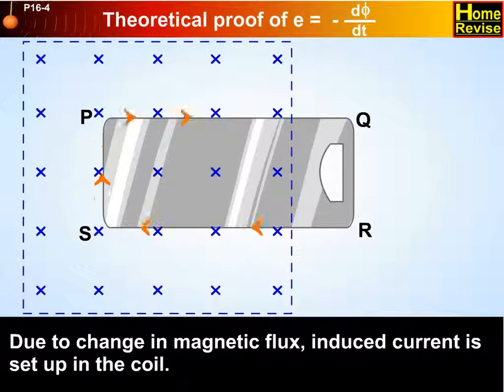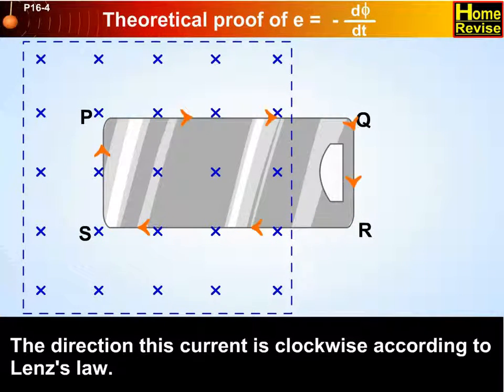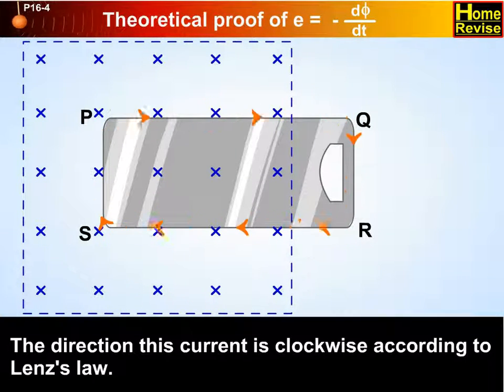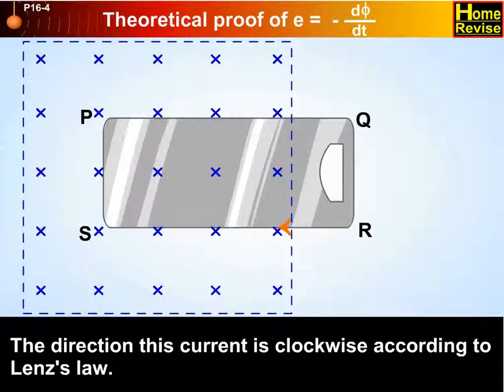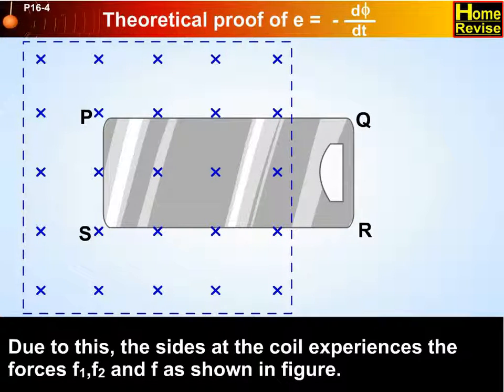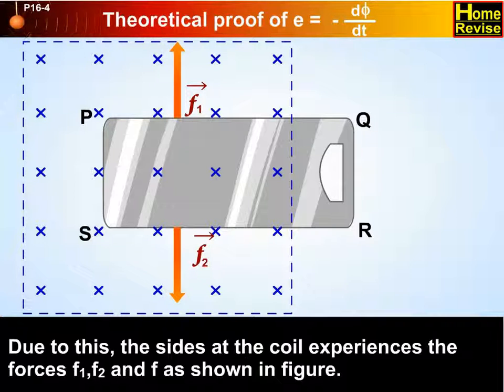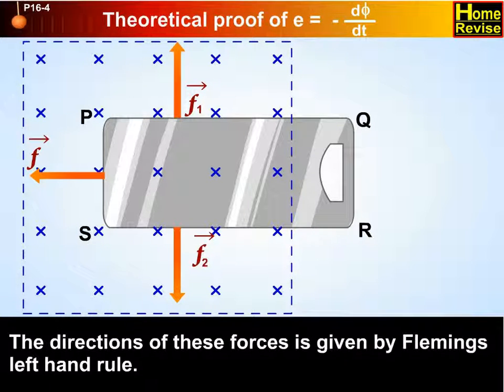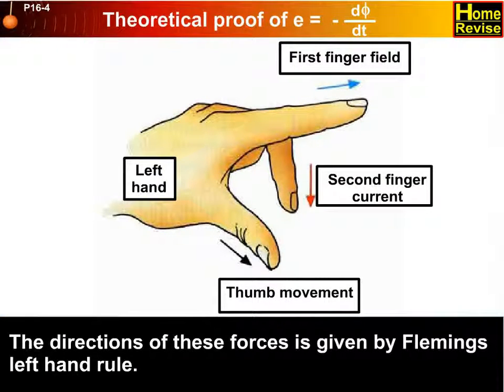Due to the change in magnetic flux, induced current is set up in the coil. The direction of this current is clockwise according to Lenz's law. Due to this, the sides of the coil experience the forces F1, F2, and F as shown in this figure. The directions of these forces are given by Fleming's left hand rule.